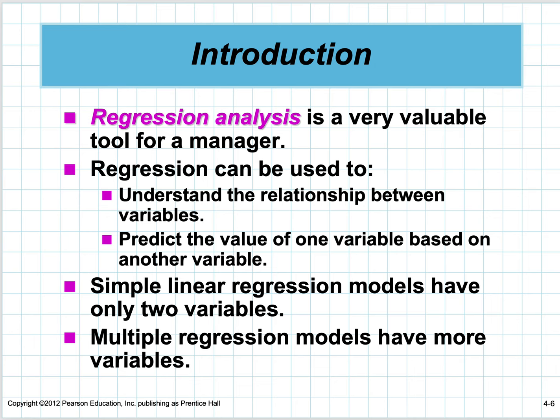Usually when we talk about simple linear regression, we're talking about two variables: a predictor variable and a predicted variable. When we talk about multiple regression models, we have more than one predictor or input variable, but we always only have one output or predicted variable.